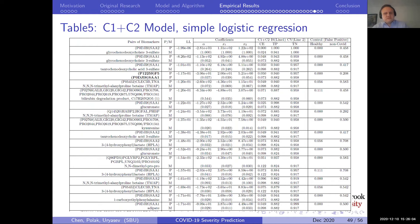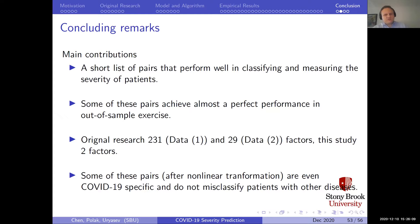To summarize: we are able to provide a short list of pairs that perform well in classifying and measuring the severity of patients. Some pairs achieve almost perfect out-of-sample performance. The original research used 231 and 29 factors respectively; this study uses only two factors. Some of these pairs after non-linear transformation can even separate non-COVID and COVID patients, making them robust against non-COVID patients in the ICU for different reasons.